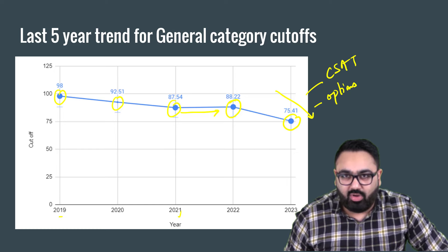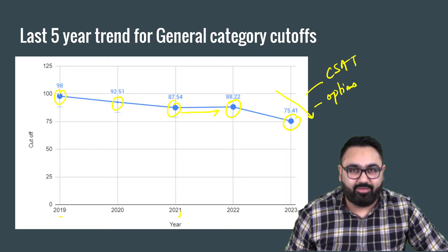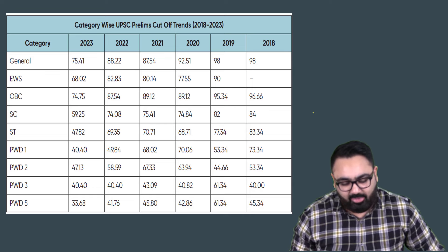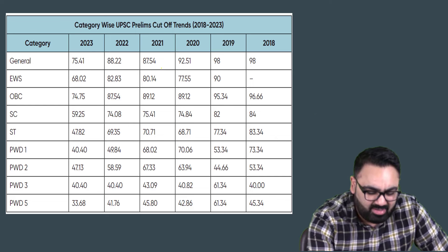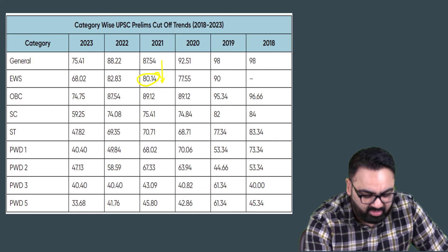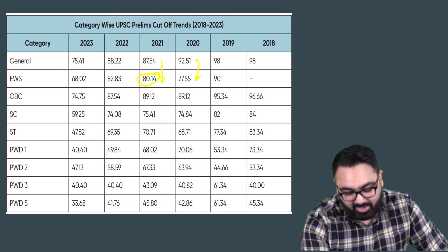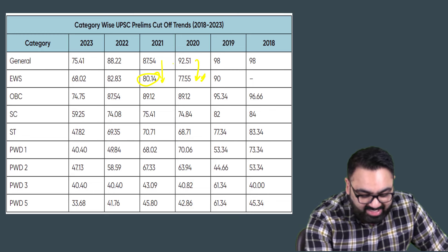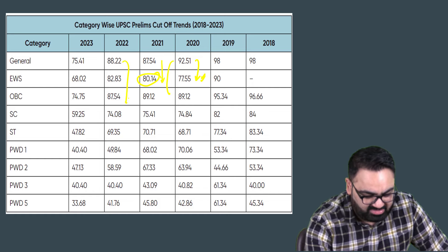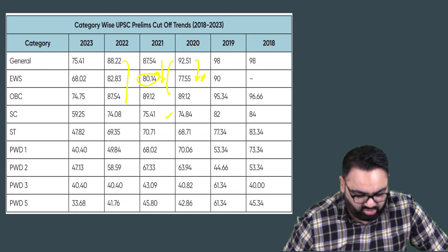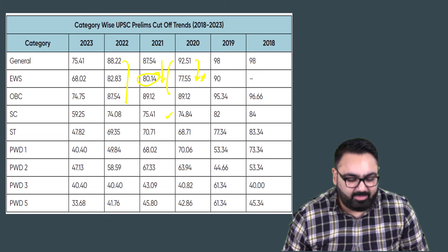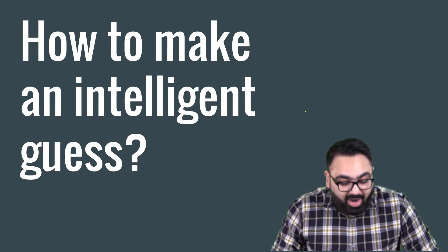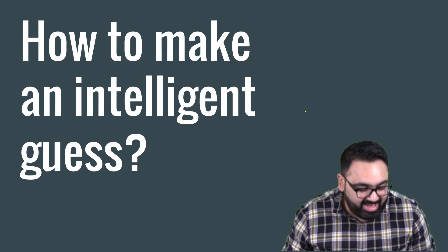Looking at cutoffs across all categories over the years: EWS tends to be about 10-15% lower than general, OBC is nearly the same as general, SC is about 20% lower, and ST about 30% lower. The pattern doesn't repeat exactly every year — cutoffs depend on the level of the paper. If the paper follows a tough pattern like last year, be conservative in your attempts. Don't go overboard with negative marking if you're not sure of the answer.